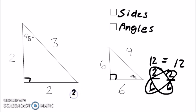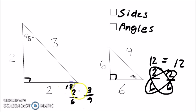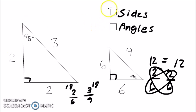And for the last one: 2 and 6, and 3 and 9. 2 times 9 is 18, and 6 times 3 is 18. So yes, all the sides are proportional.